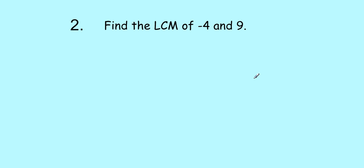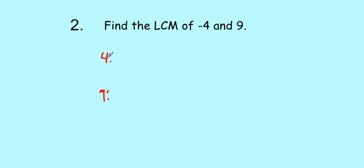Let's look at number two. Find the LCM of negative 4 and 9. The negative doesn't change anything for the LCM. We're still going to list the same multiples — we can even look at it as positive 4 and 9. They share the same multiples whether they're positive or negative.